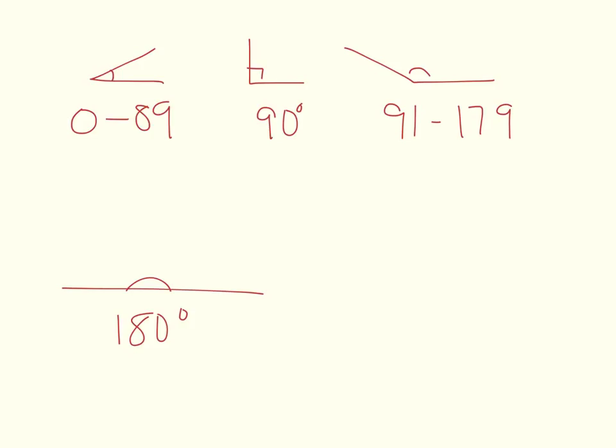Now, larger than 180 degrees is called a reflex angle, which is actually larger, so we're actually measuring this part right here. And that's anywhere from 181 to 359. A full angle here would be all the way around from one side to the other, and that would be 360 degrees. So that's just a tutorial on the different types of angles.